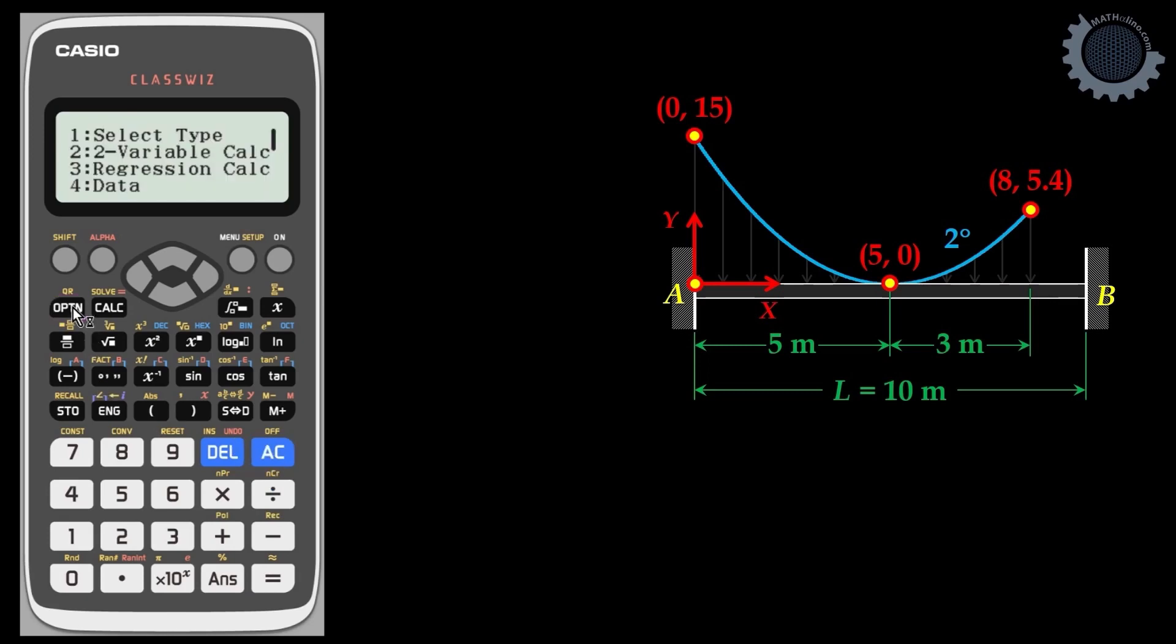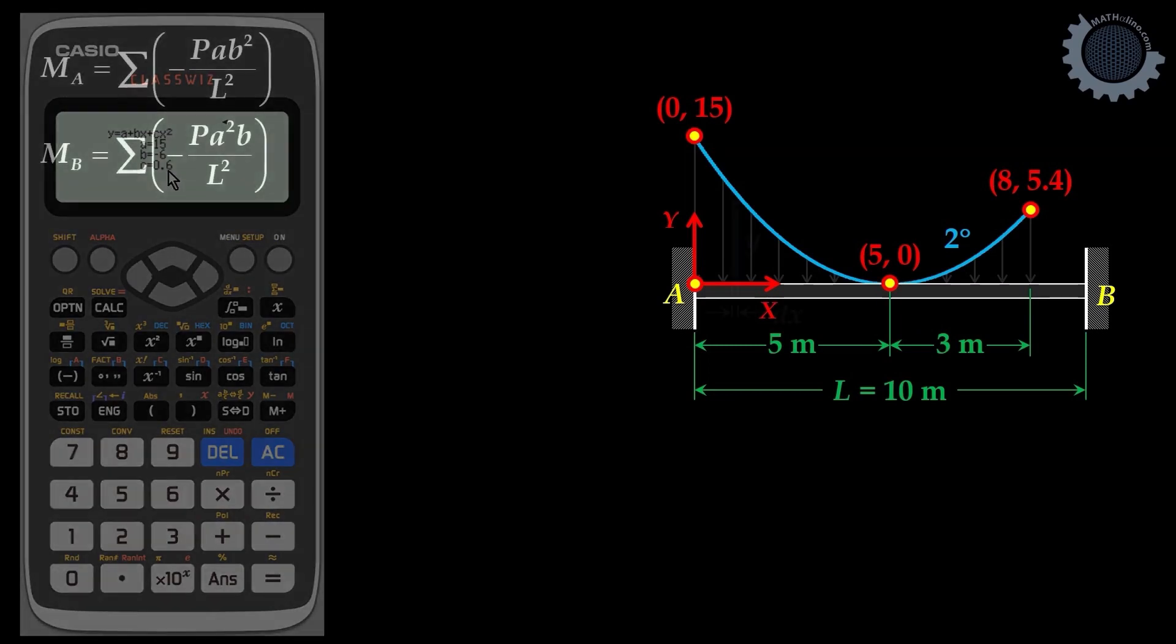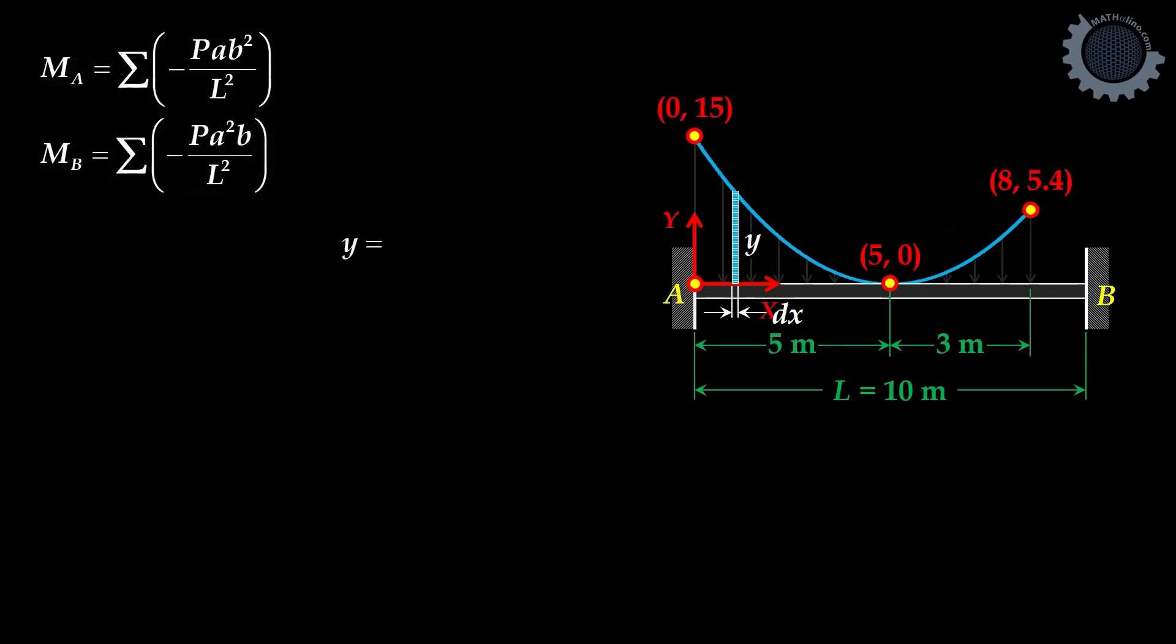AC, then option, select number 3, regression. This is the equation of our parabola: Y is equal to 15 minus 6X plus 0.6 of X squared.